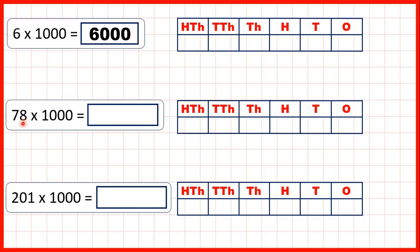Now we have 78 times a thousand. That's 78,000 so 78 with three zeros on the end. 78 times one is 78 but multiplying by a thousand means we need to write these three zeros on the end of our answer.